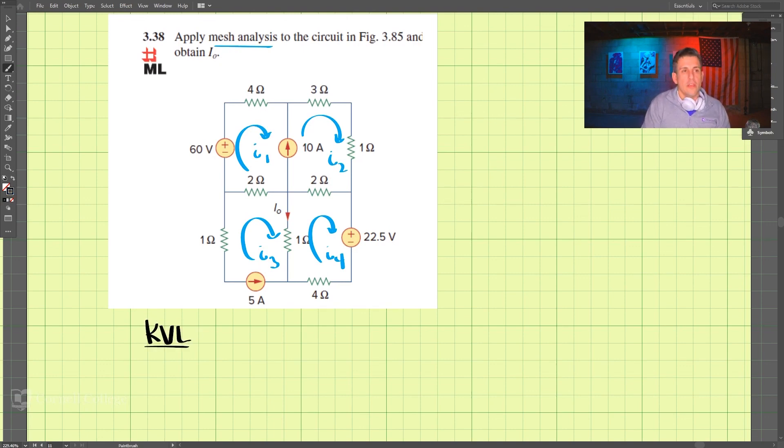Now if you notice here, we have a current source, and remember that we cannot find the voltage through a current source using KVL, so we need to make sure we do our loops appropriately. So the first one I'm going to do...